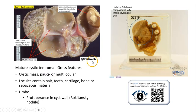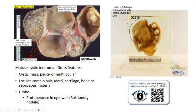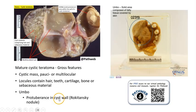Here is the annotated gross pathology picture from PathWeb, and you can see the umbo, or the solid area, and the cyst contents that appear quite different. Usually this is a cystic mass, which can be unilocular or multilocular. The locules contain hair, teeth, cartilage, bone, or sebaceous oily material. The umbo is the solid area — a protuberance in the cyst wall — and sometimes it is known as the Rokitansky nodule.